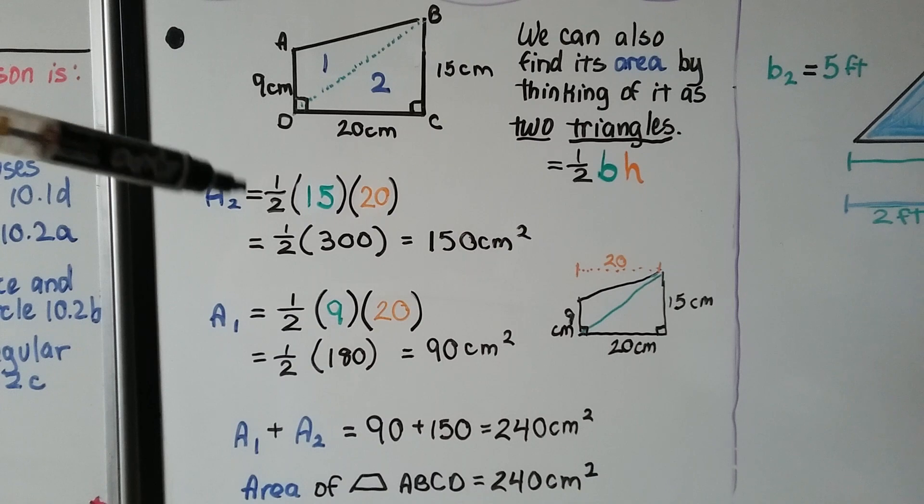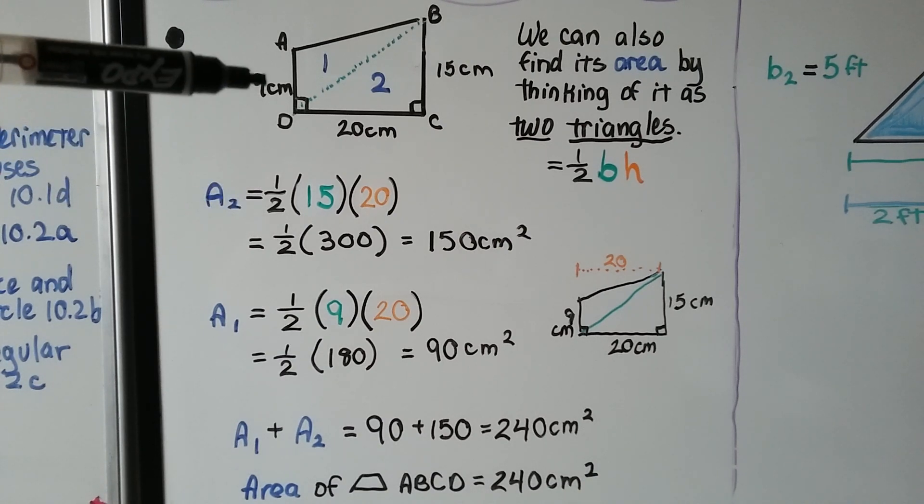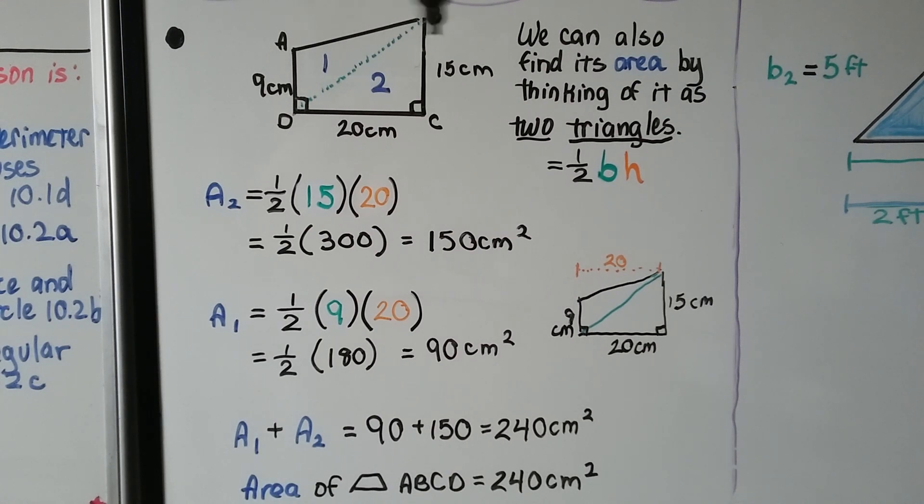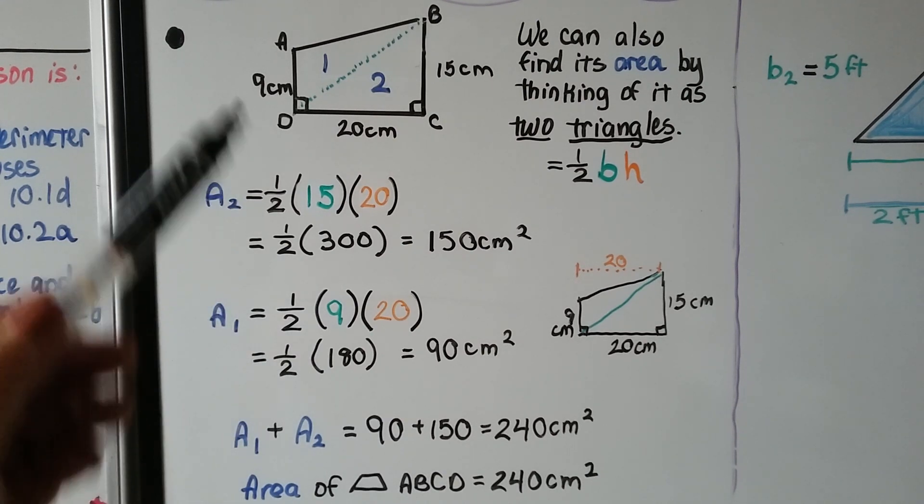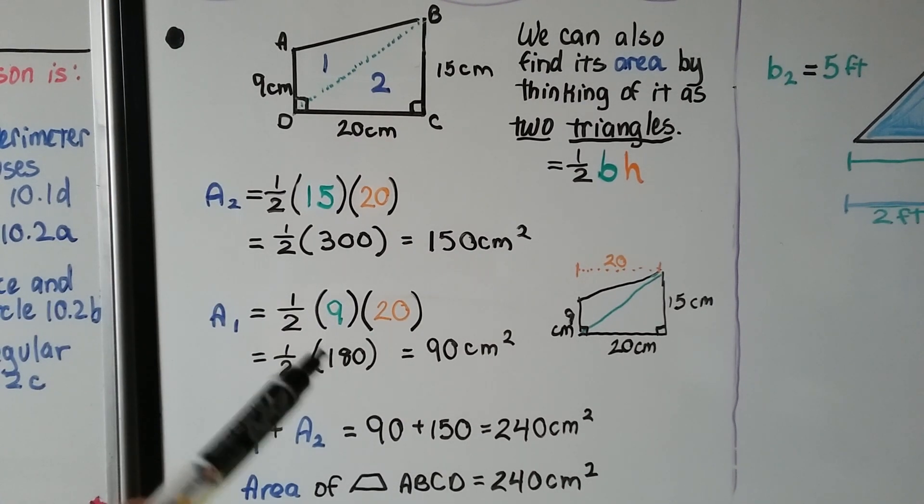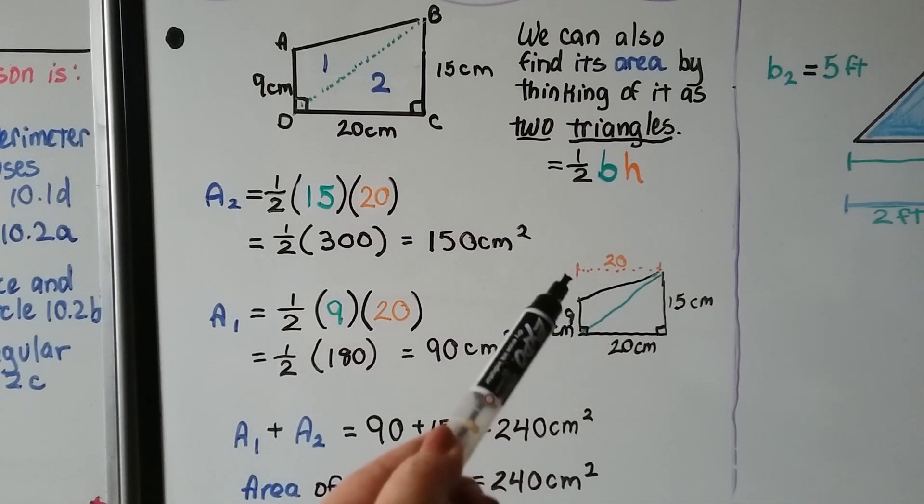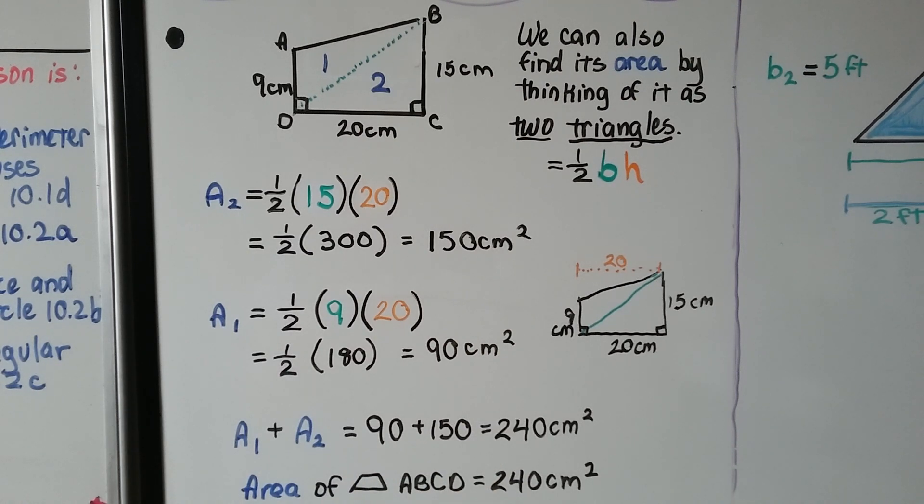For triangle 1, we can do the 9 times the 20, because that would be the height of this triangle. We'd have like an imaginary height line right here, and we could multiply it by a half, and 180 times a half would be 90. We add them together, and we get an area of 240 centimeters squared, same as if we split it into a rectangle in a triangle.